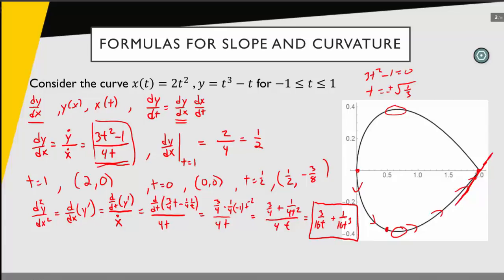I could also ask where I might have a vertical tangent line — where does my slope tend toward infinity? There the denominator is 0, so at t equals 0 I would have an infinite slope. The second derivative talks about the concavity of the curve. Where the second derivative is positive, my curve will be concave up, and where it's negative, I'll be concave down. When I plug in positive t values into my second derivative, I get positive values, so for t greater than 0 the curve is concave up. Conversely, for t less than 0, the curve is concave down.